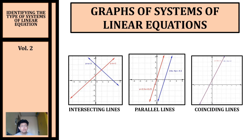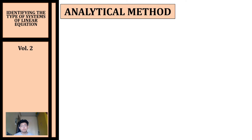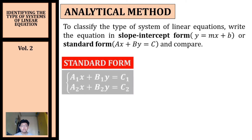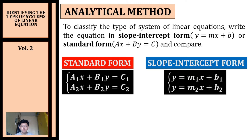Now, instead of graphing our systems of linear equations — because it is going to be time consuming — let's use an alternative method of identifying the type of system of linear equation. We'll use the analytical method. For the analytical method, we must write our equation in slope-intercept form or in standard form. For standard form, we compare the ratio of a, b, and c. For slope-intercept form, we compare our slopes and y-intercepts.